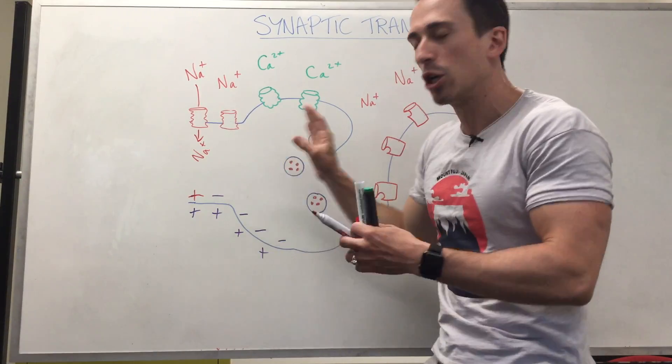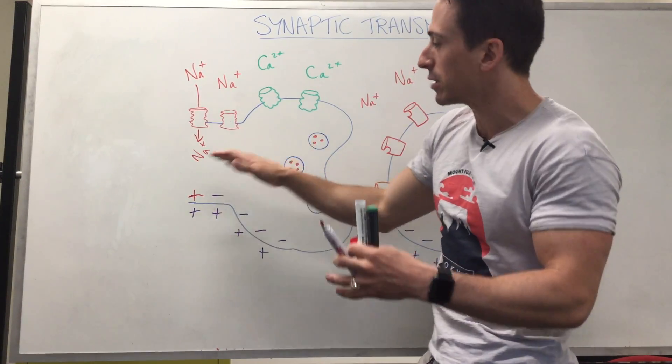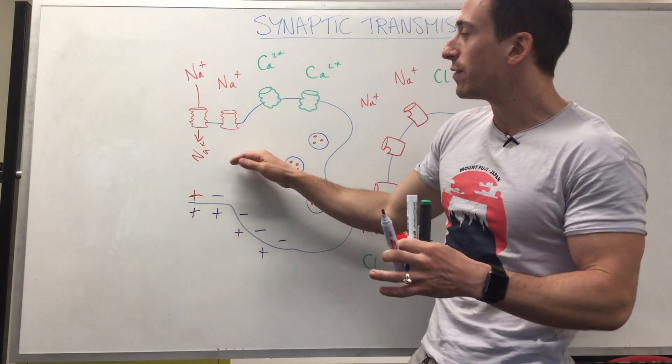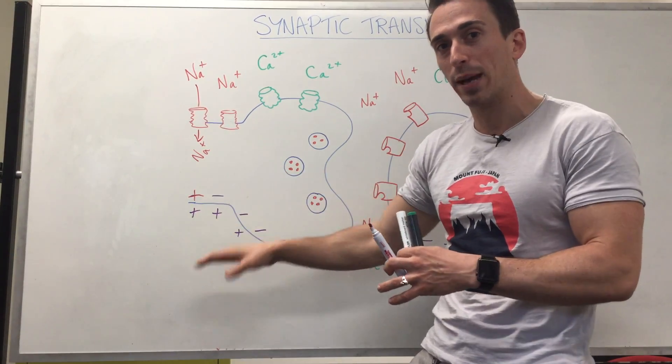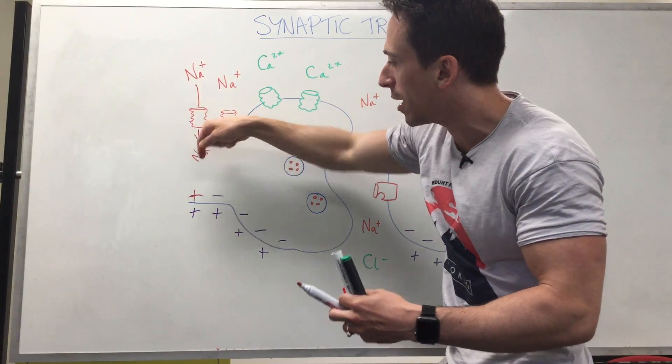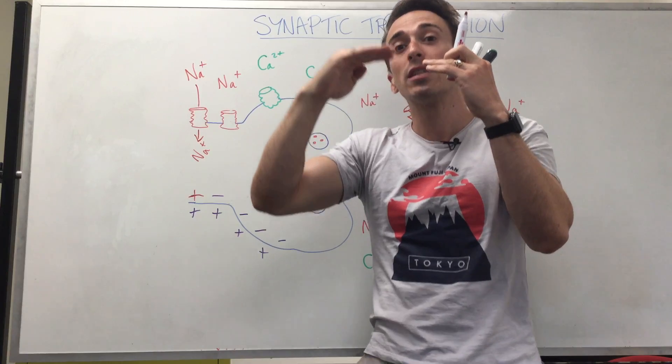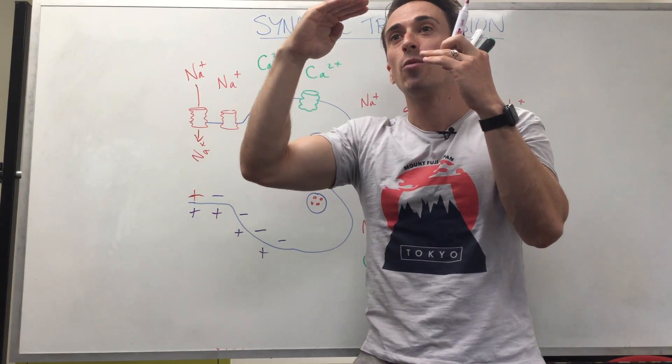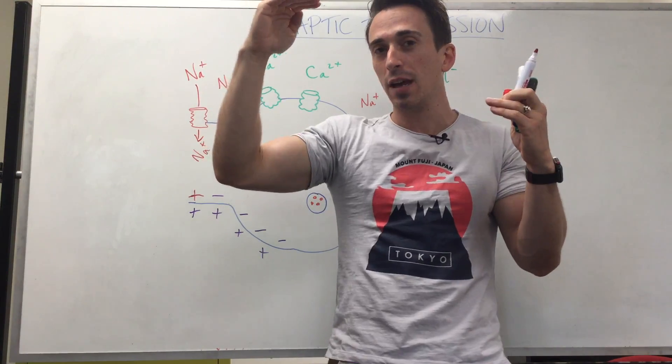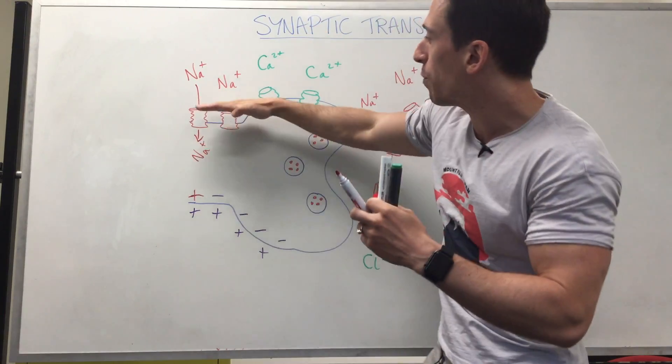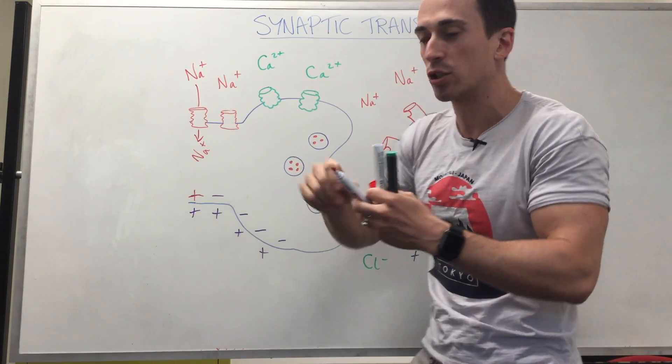Now remember, at rest a neuron has a charge difference from inside compared to outside. It's negative 70 millivolts inside compared to outside. Once the positive sodium moves in, it brings that charge up from negative 70 to negative 65 to negative 60. And then when it hits negative 55, that's the threshold to open up all of these voltage-gated sodium channels.